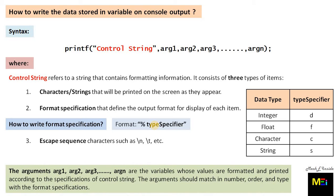The next part of printf syntax is the arguments. Arguments 1, 2, up to n are the variables whose values are formatted and printed according to the control string specifications. The arguments must match in number, order, and type with the format specifications.